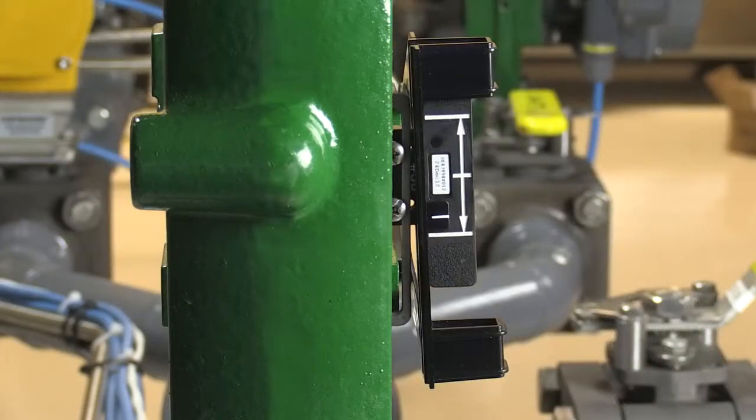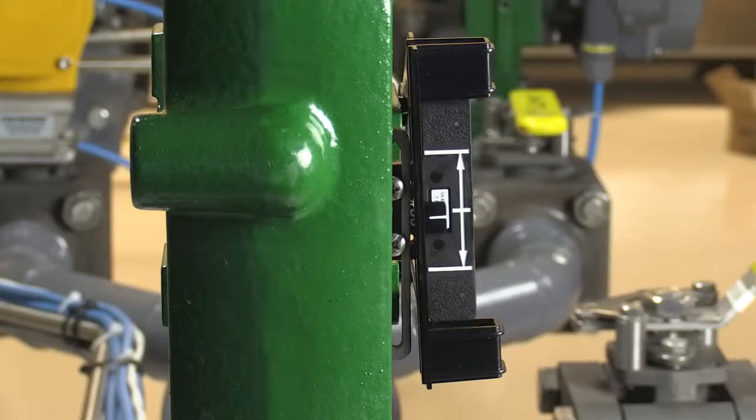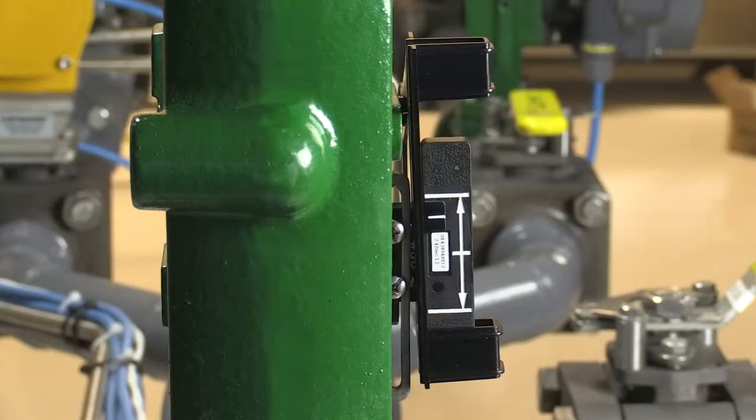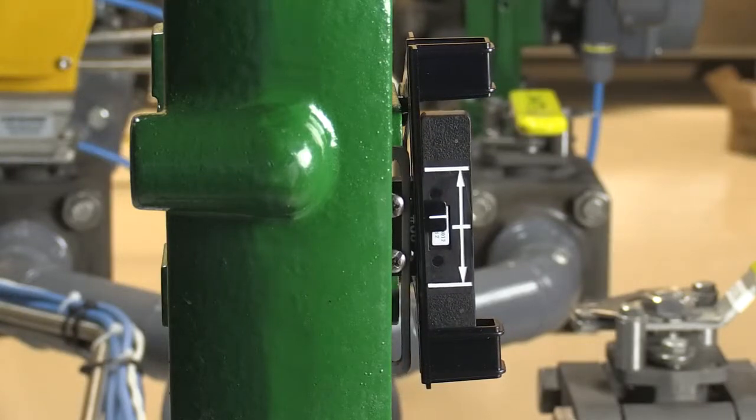Once we've aligned the magnetic array, we'll stroke the valve one complete cycle to make sure the template's white line stays within the lines on the array for the full travel distance.